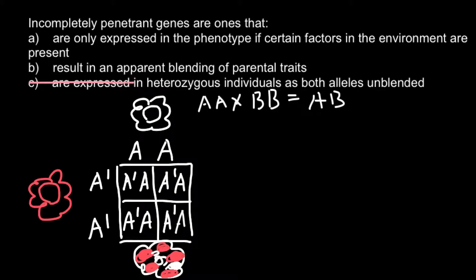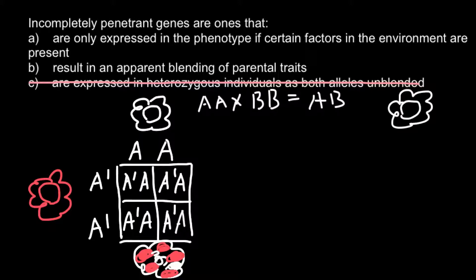So answer C is not our answer because this describes co-dominance, and our question asks about incompletely penetrant genes. Let's consider answer B: result in apparent blending of parental traits. This looks like it might be the correct answer, so here is an example of what we get when we have blending of traits.